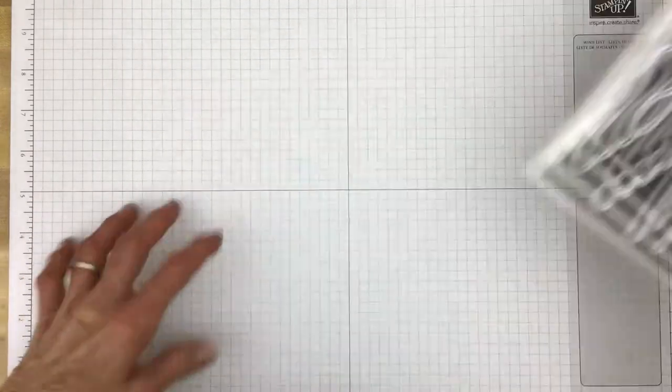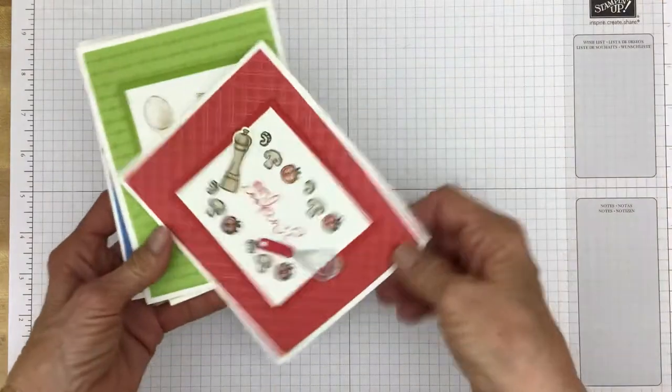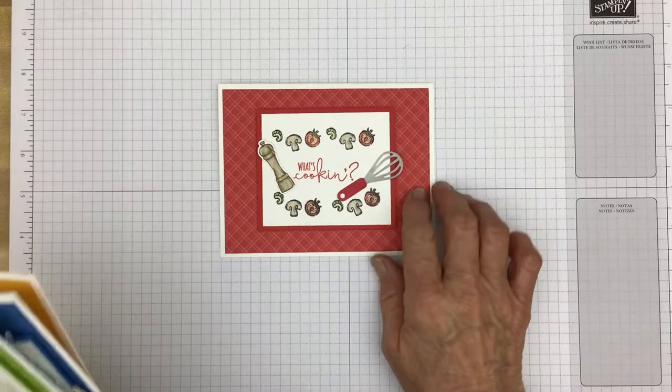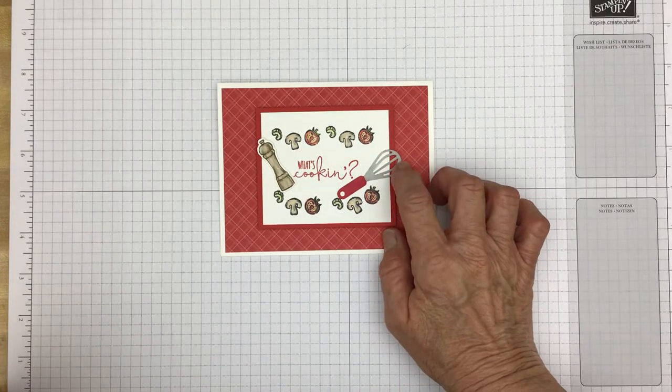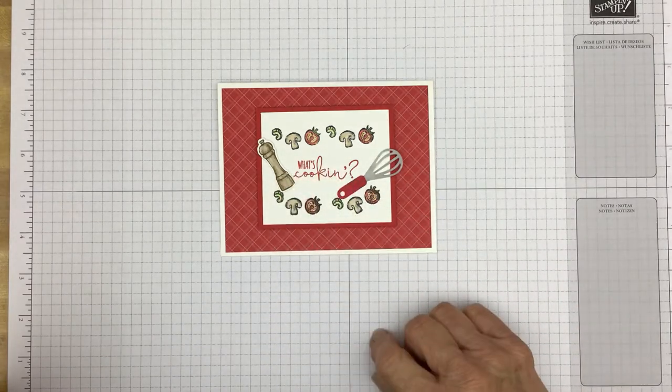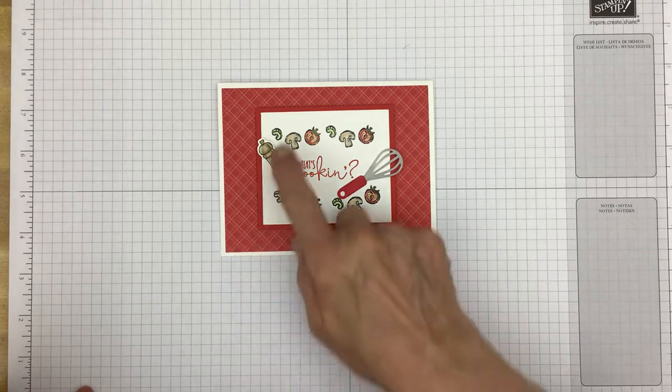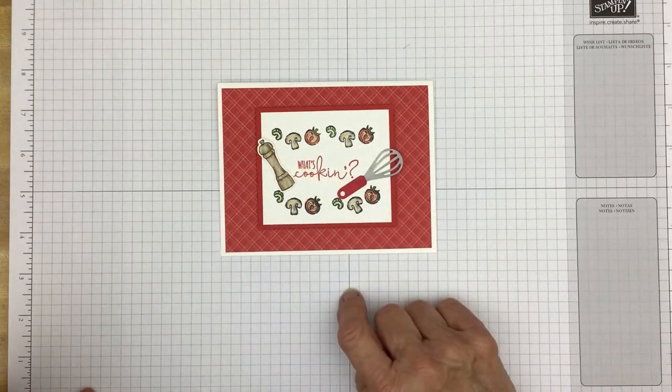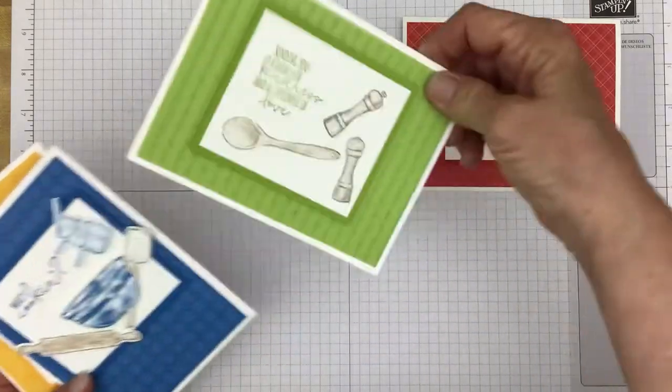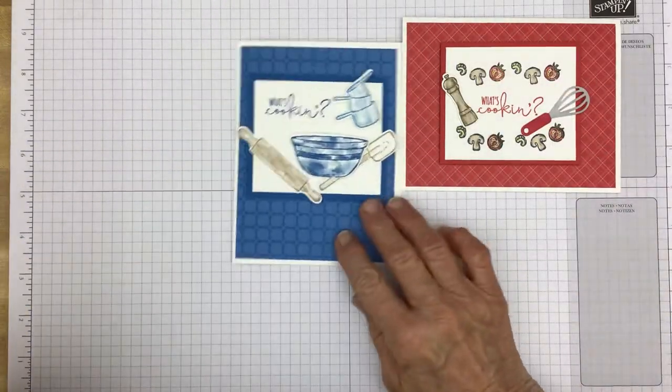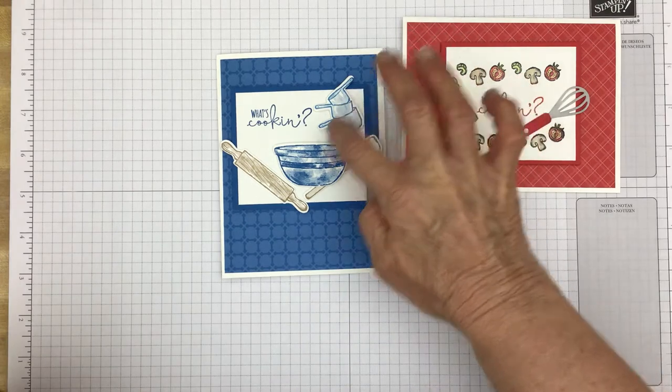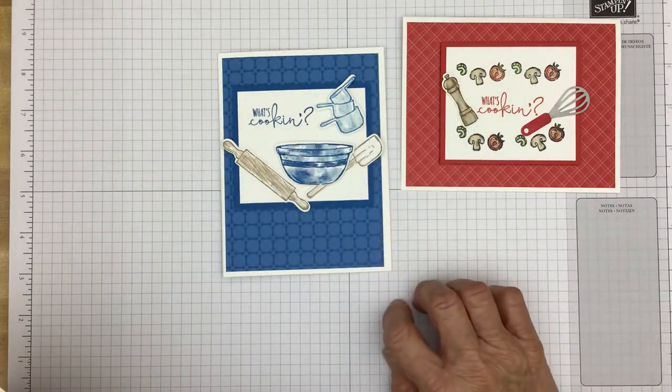And then these cards they're absolutely not fancy. There's nothing hard about them at all. This one has the little whisk that was die cut and the little pepper grinder. It was stamped and die cut as well. These were just stamped and colored with the Stampin' Blends.